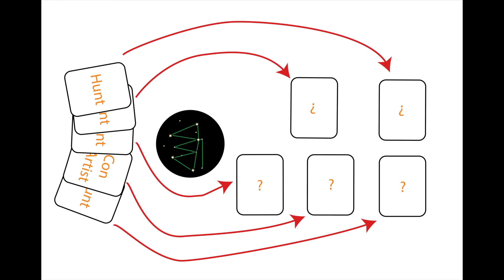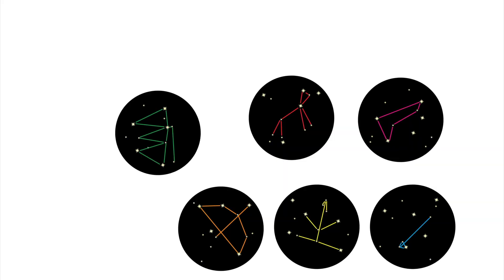Next, all players, except the head astronomer, must draw a constellation related to the topic. Constellations are drawn on star cards by connecting any of the stars in straight lines. Once everyone has created their constellation, they simultaneously display their drawings face-up in front of them.